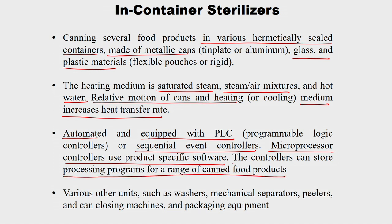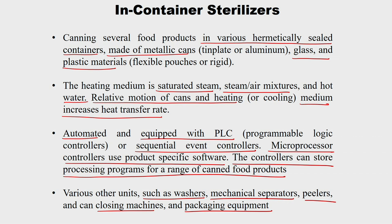Processing programs for large canned food products use a GUI (graphical user interface) — you select the particular food product and it automatically gives the time and temperature to be maintained. Various other units such as washers, mechanical separators, peelers, can closing machines, and packaging equipment are also part of thermal processing equipment. Before going into proper thermal sterilization or pasteurization, there are food handling units in the canning industry, and these machines also come under the category of thermal processing equipment.